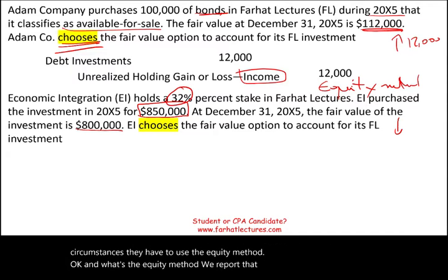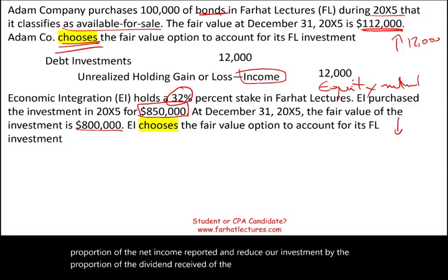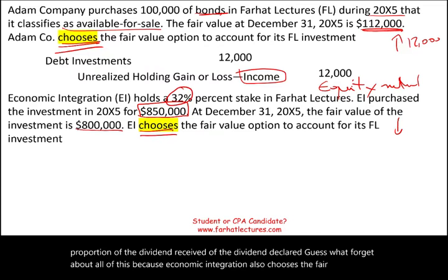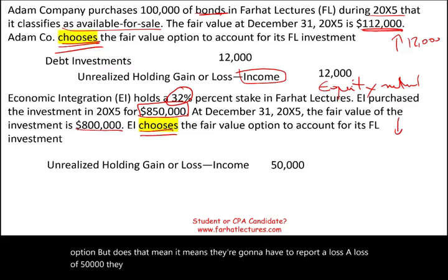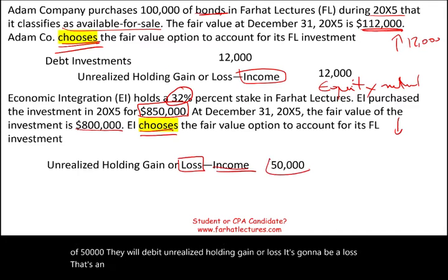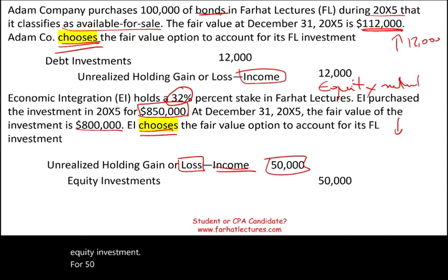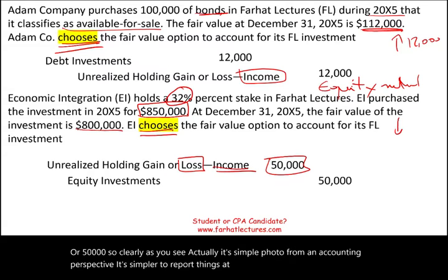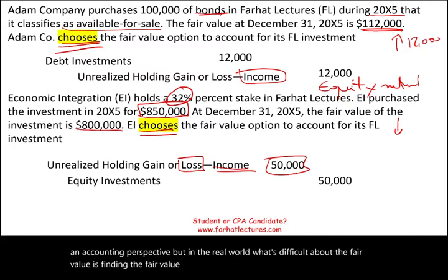Under the equity method, we increase our investment in proportion to net income reported and reduce our investment by the proportion of dividends declared. But forget about all of this, because Economic Integration also chooses the fair value option. That means they're going to report a loss of $50,000 — they will debit unrealized holding loss, an income statement account, for $50,000 and credit the equity investment for $50,000. It's simpler from an accounting perspective to report things using the fair value option, but in the real world, what's difficult is finding the fair value itself for certain assets and liabilities.